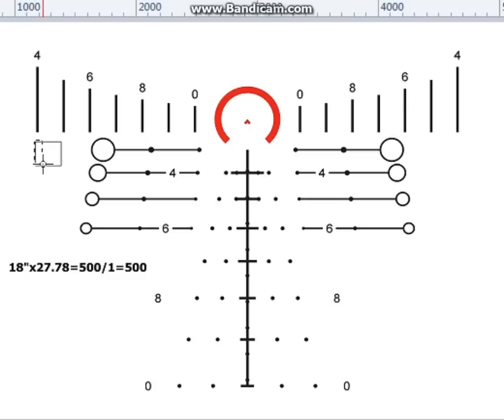Now, all you do is take your target and measure it against the mils here. As you can see, it measures exactly one mil. So we take that conversion number that we got by multiplying 18 by 27.78, and we divide it by how many mils are actually covering the target, which we got one. So 500 divided by one equals 500. This target would be 500 yards away.